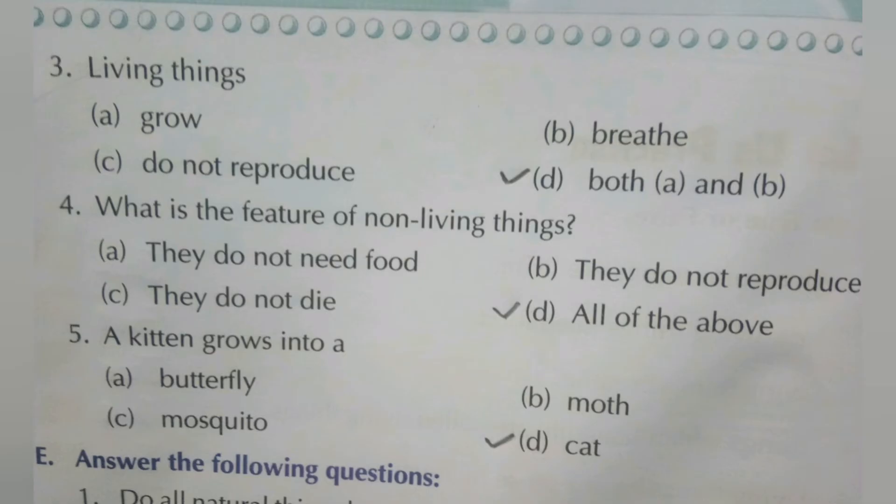Fifth MCQ: a kitten grows into a — butterfly? No. Moth? No. Mosquito? No. D: cat — yes, that is correct.